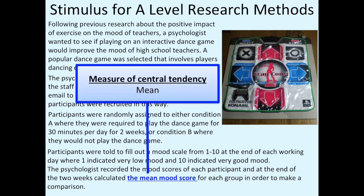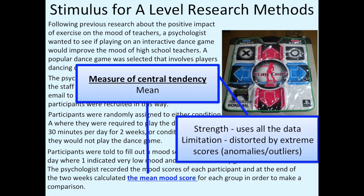I would also make note of the fact that the psychologist has used the mean as their measure of central tendency. A strength of the mean is that it is the most sensitive measure of central tendency because it uses all the data. However, a limitation of using the mean is that it can be easily distorted by extreme scores — sometimes called anomalies or outliers.